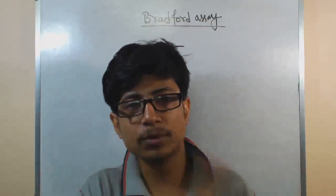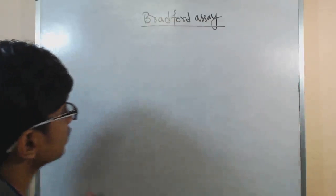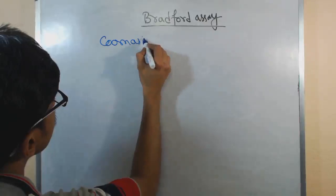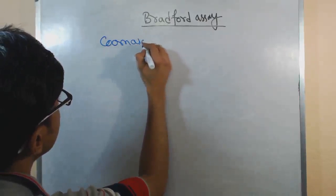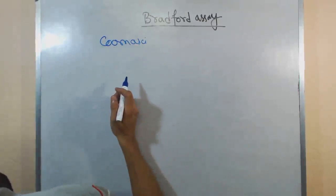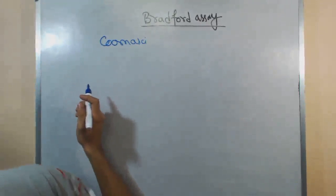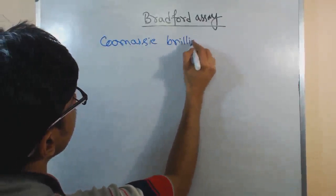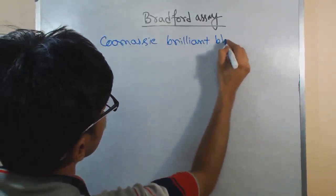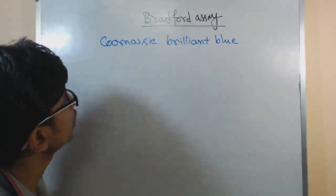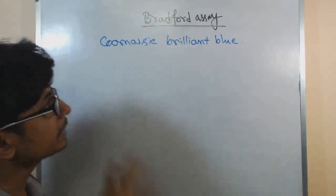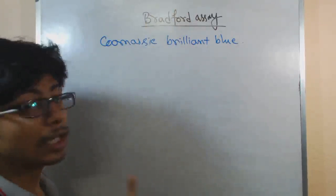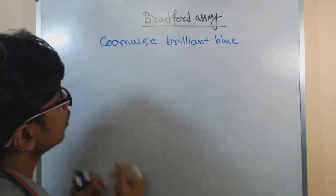When you use a dye, absorbance shift means, let me first write it Coomassie, one minute. Let me check the spelling because this is tricky. It says Coomassie brilliant blue. This is the dye that we use.